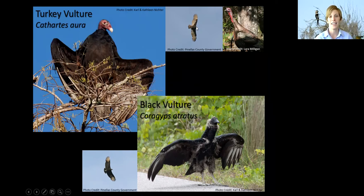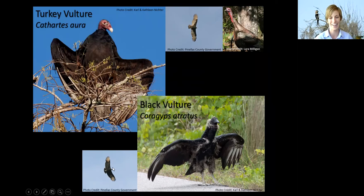Another thing to look at is the underside, which is how we often see them in flight. The coloration looks different: on the turkey vulture, the darker coloration forms a T — you can think T for turkey vulture. Compared to the black vulture, which only has lighter coloration just at the tips. I think of a black-tip shark for the black vulture — the wing tips are lighter in color. So those are some different ways to tell these apart.